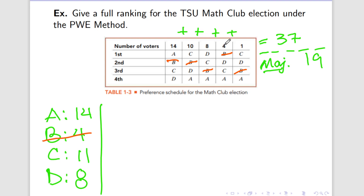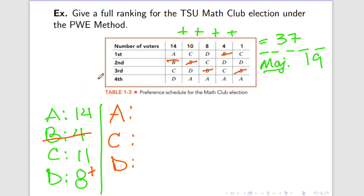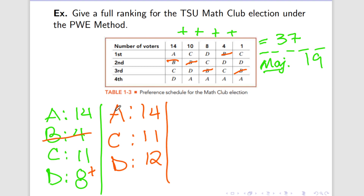We see that B only held first place here in column 4, and the candidate underneath B is D. So D is going to get all of B's first place votes, and we can go again. This is round 2. In round 2, A hasn't changed at all, and C has not changed at all. Only D changed by getting all of B's votes, which puts us at 12 votes for D.